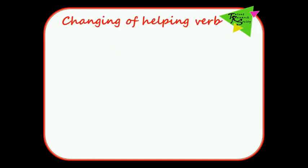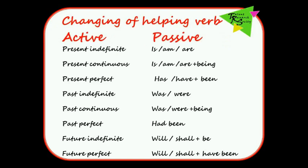Changing of helping verb in passive voice: Present indefinite — IS/AM/ARE. Present continuous — IS/AM/ARE plus BEING. Present perfect — HAS/HAVE plus BEEN. Past indefinite — WAS/WERE. Past continuous — WAS/WERE plus BEING. Past perfect — HAD BEEN. Future indefinite — WILL/SHALL plus BE. Future perfect — WILL/SHALL plus HAVE BEEN.